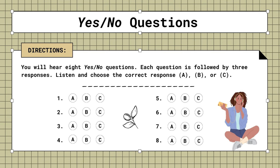Minitest. Yes, no questions. You will hear eight yes, no questions. Each question is followed by three responses. Listen and choose the correct response. A, B, or C.